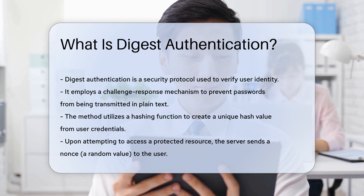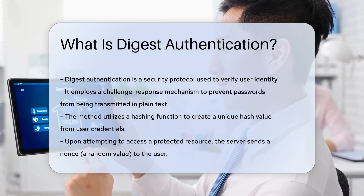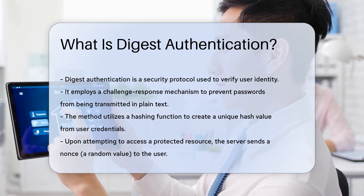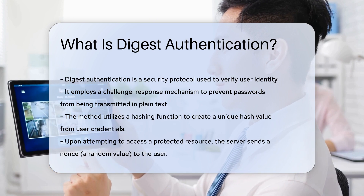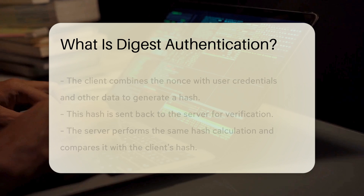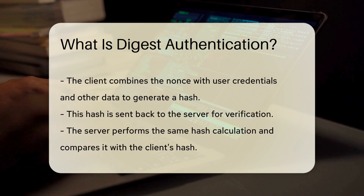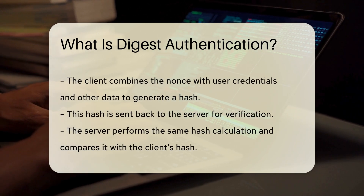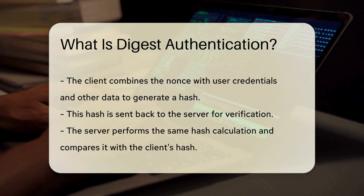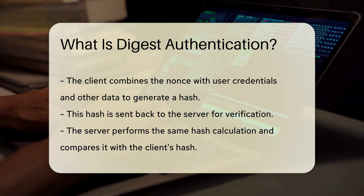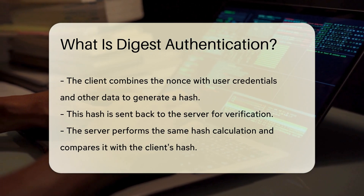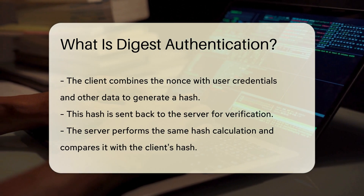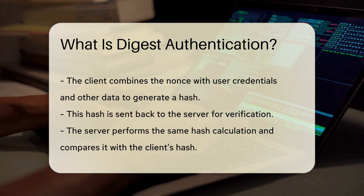When a user attempts to access a protected resource, the server sends a nonce, which is a random value. The client then combines this nonce with the user's credentials and other data to create a hash. This hash is sent back to the server. The server performs the same hash calculation and compares it with the hash received from the client.